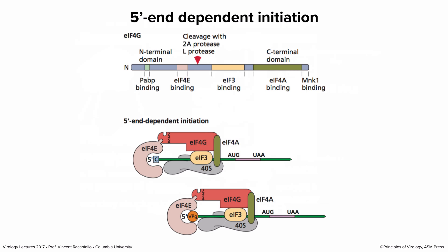eIF4G is a large protein, over 200,000 Daltons, with binding sites for eIF4E, eIF3, eIF4A (a helicase), and poly-A binding protein. It's really important for translation. It also turns out to be the target of a viral protease—cleavage of eIF4G inactivates it and is a point of regulation of translation by viruses.